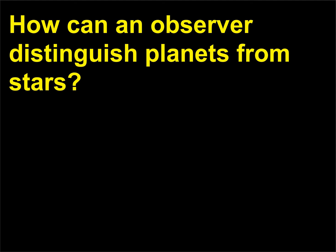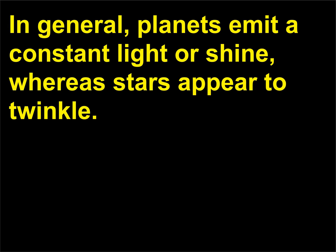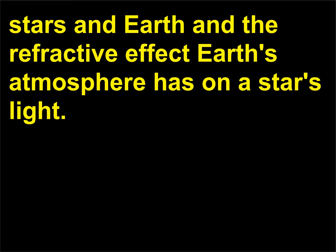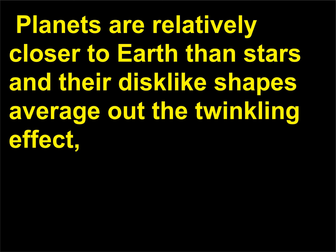How can an observer distinguish planets from stars? In general, planets emit a constant light or shine, whereas stars appear to twinkle. The twinkling effect is caused by the combination of the distance between the stars and Earth and the refractive effect Earth's atmosphere has on a star's light. Planets are relatively closer to Earth than stars and their disc-like shapes average out the twinkling effect.